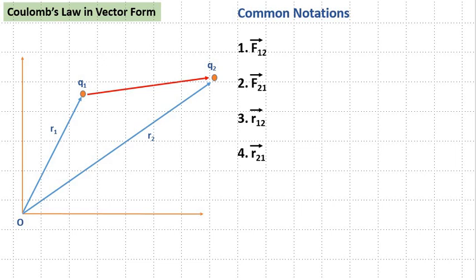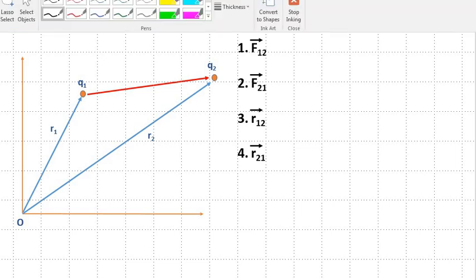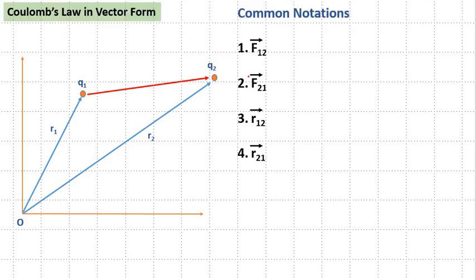When we write Coulomb's law, before understanding it we must understand a few notations like what is F12, F21, r12, and r21.